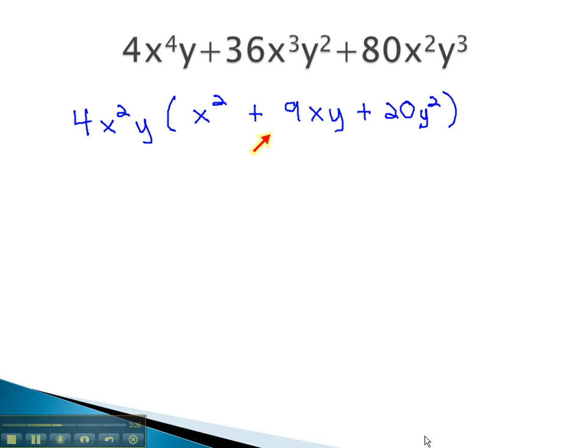We can now factor the trinomial using the AC method, and conveniently, there is a 1 in front of the x squared, so we can get to our factors much quicker.